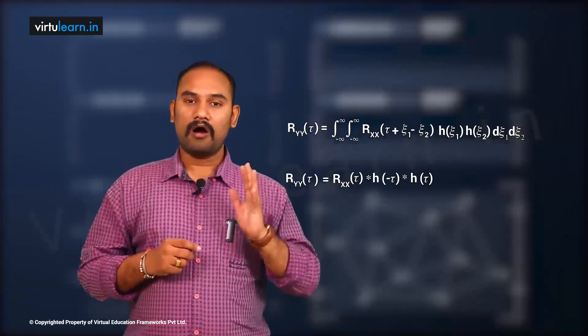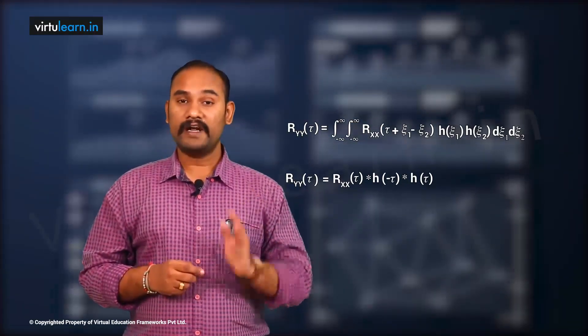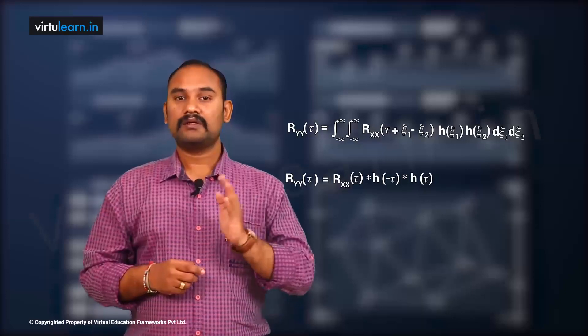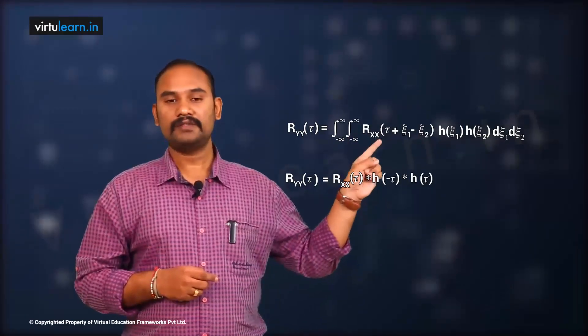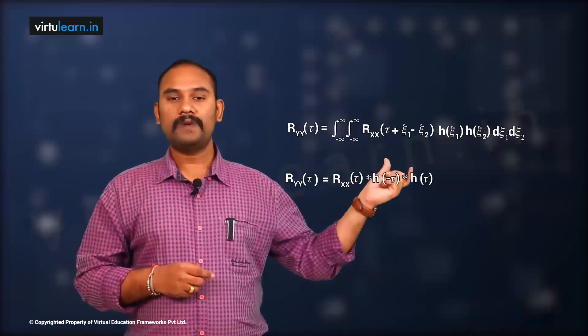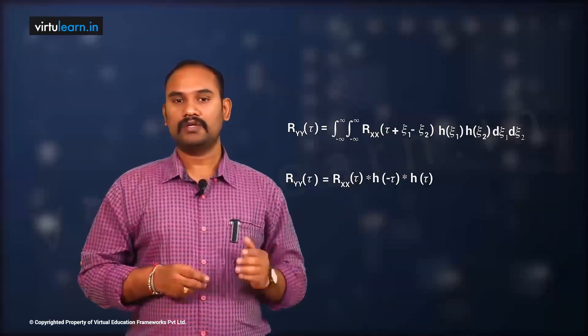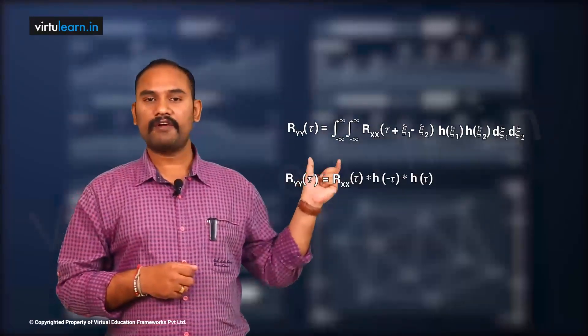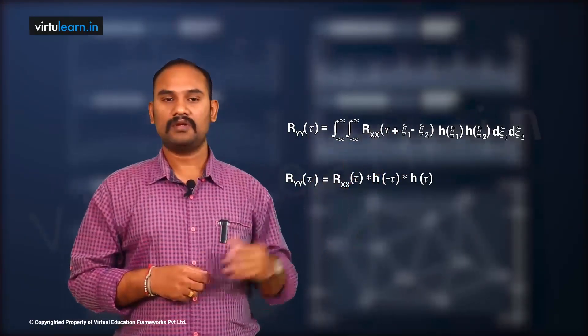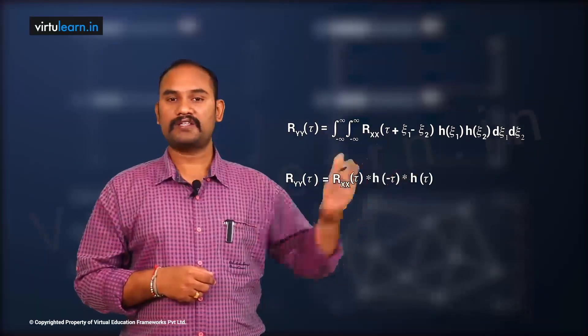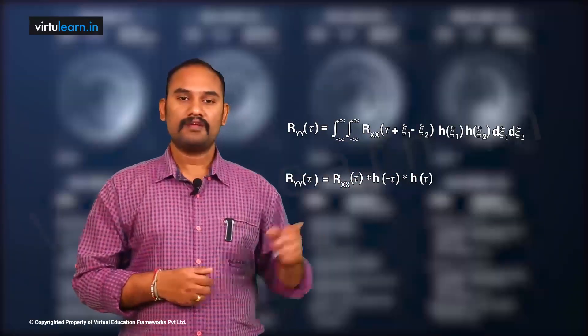The ACF of the wide-sense stationary response is equal to the double integral from −∞ to ∞ of Rxx(τ + ζ₁ − ζ₂) · h(ζ₁) · h(ζ₂) dζ₁ dζ₂. The ACF is a function of the difference ζ₁ − ζ₂. On the left side we have Ryy(τ) and on the right side we have Rxx in the integral.